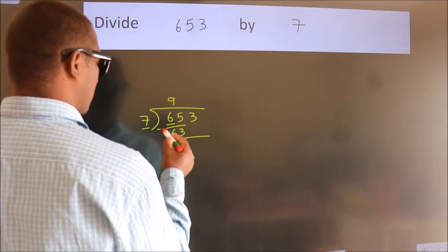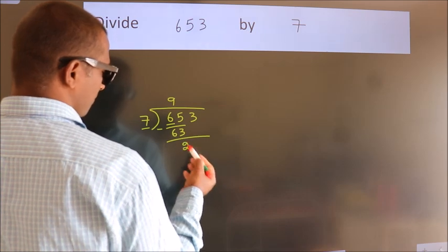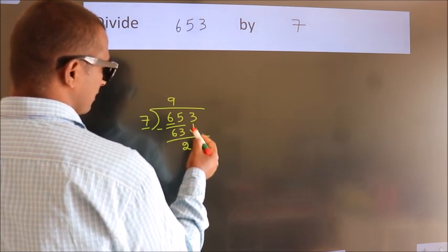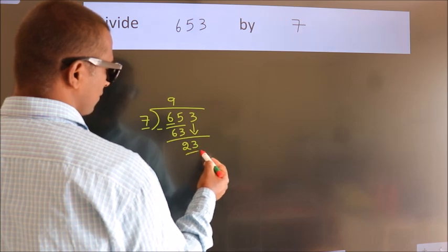Now we should subtract. We get 2. After this, bring down the beside number. So 3 down. So 23.